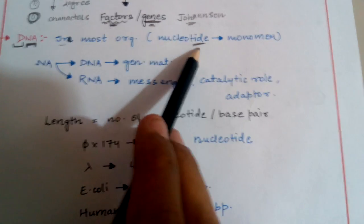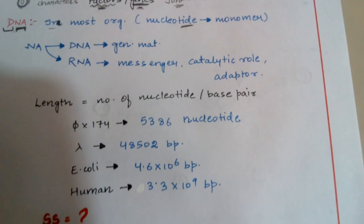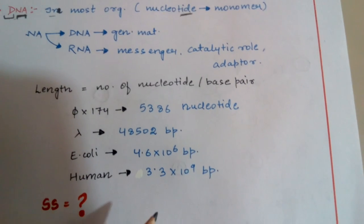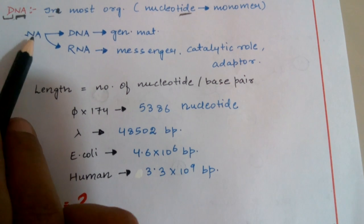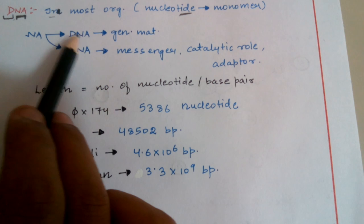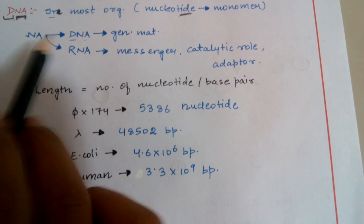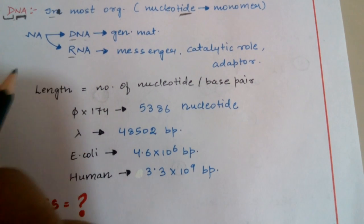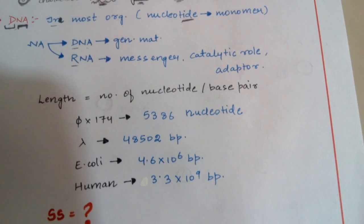Nucleotide is the monomer of nucleic acid, which polymerizes to form nucleic acid. Nucleic acid is of two types: deoxyribonucleic acid, in which deoxyribose is the sugar, and ribonucleic acid, in which ribose is the sugar. So why is DNA more stable? We are now going to talk about that.